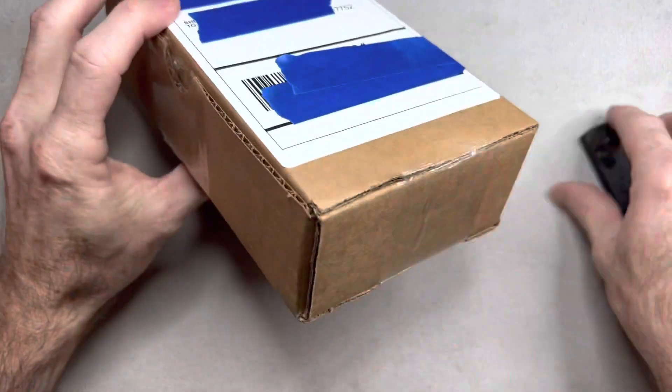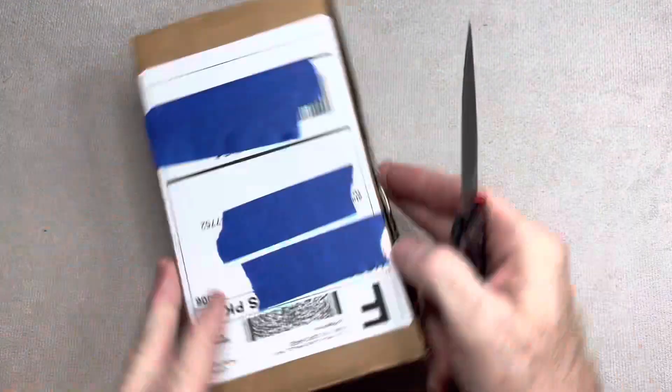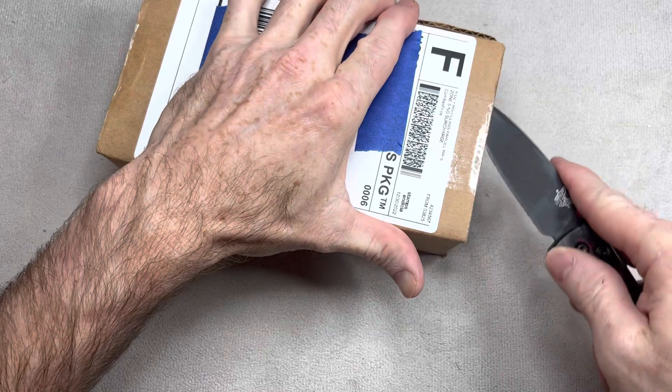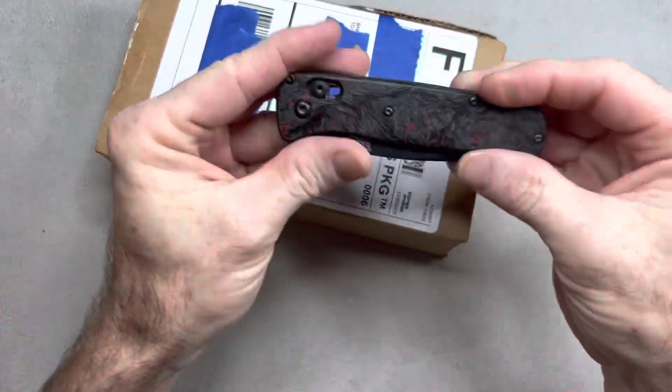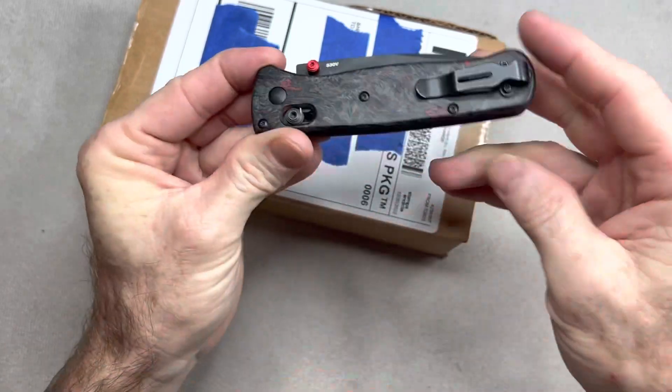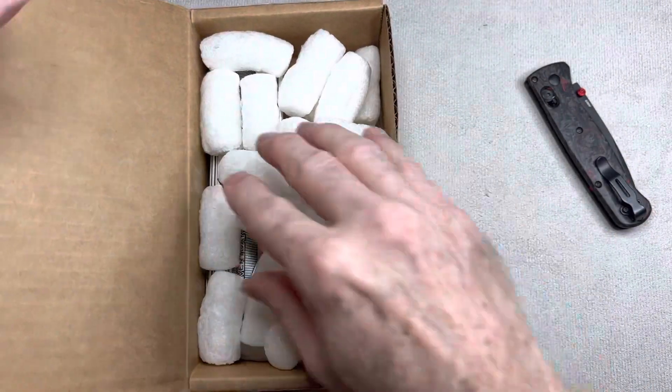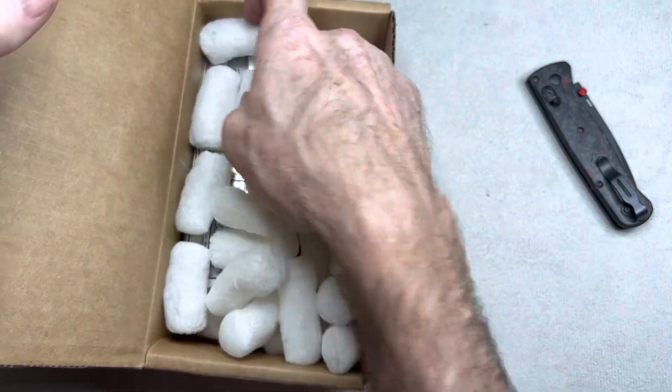The unboxing knife is the Benchmade Bugout by the way, with custom Scale Division red dark matter scales on it. You can find Custom Scale Division on Instagram.